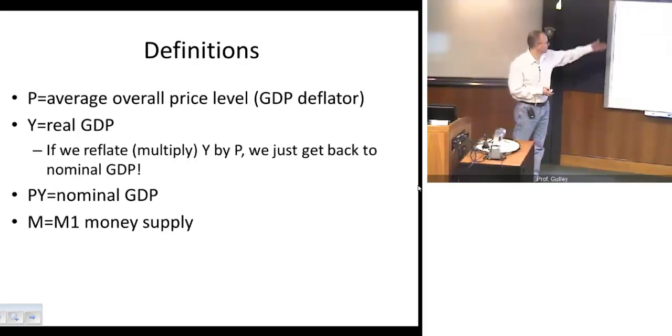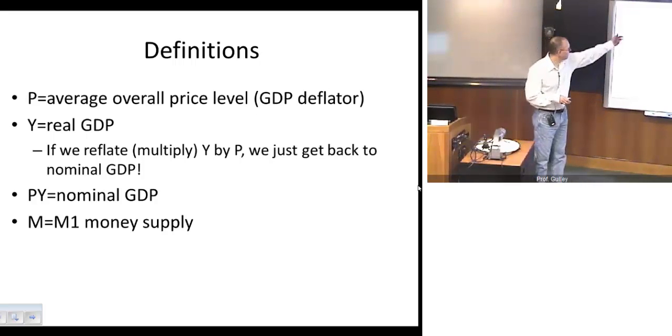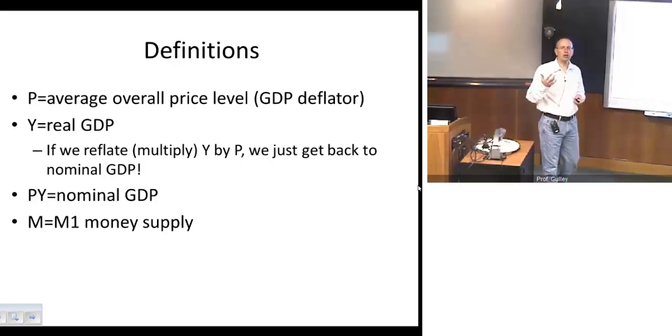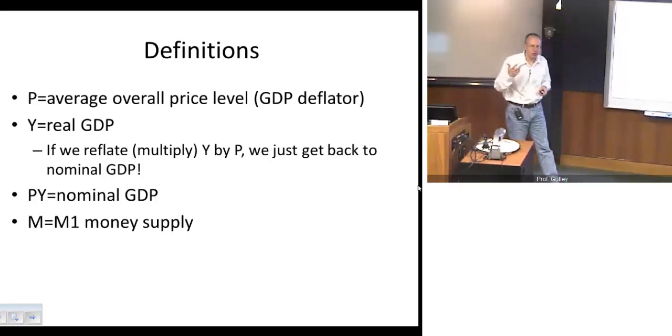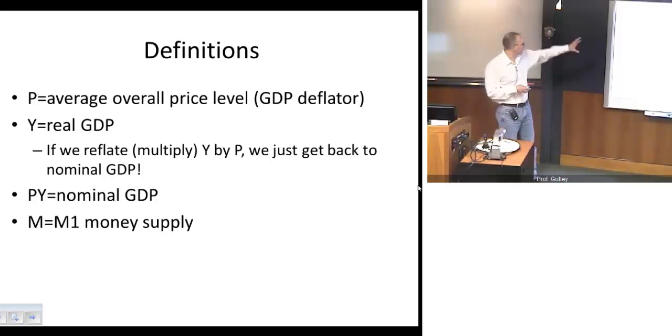So the way we'll approach things here is this. We'll start off with some basic definitions. So let's say P is the overall price level, and you can imagine that as something like the GDP deflator. Y, we'll call real GDP. Again, that's the real production of all goods and services broken down typically by consumption, investment, government spending, and net exports. And if we reflate real GDP by the price level, multiply real GDP by the price level, we get back to nominal GDP, just the final value of all goods and services produced over a particular time period. So P times Y will be just nominal GDP. And then finally, we'll define plain big M here as the M1 money supply.